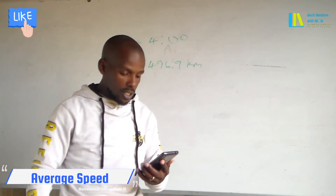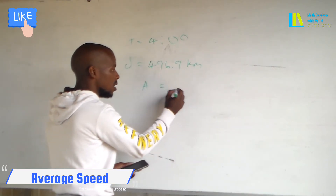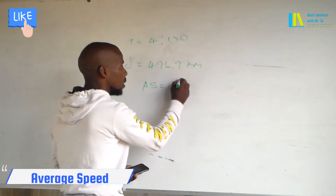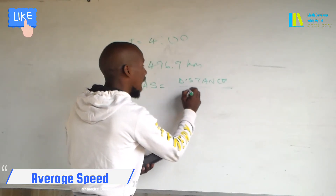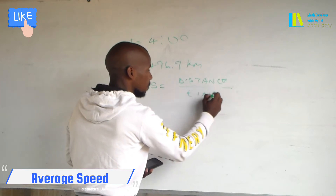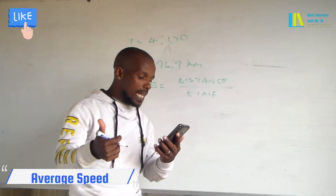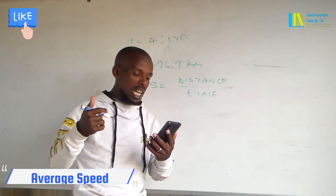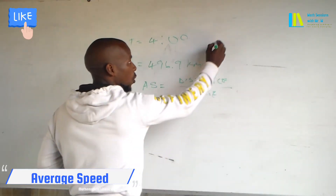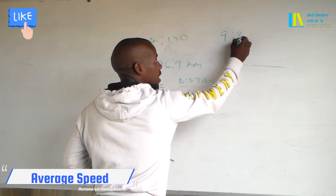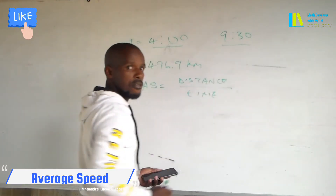Now we use our givens according to the formula. The formula for average speed is: average speed equals distance over time. They are saying, rounded to the nearest kilometre, find the average speed they must travel to arrive by 9:30. So there is also an arrival time of 9:30 — they depart at 4am and arrive at 9:30.